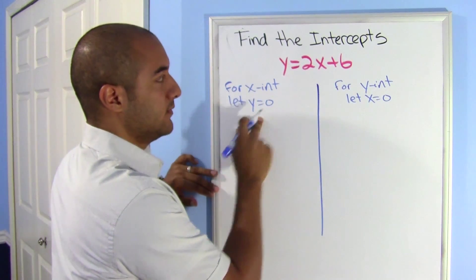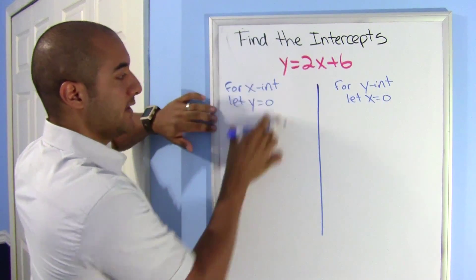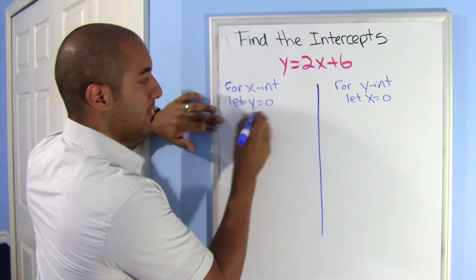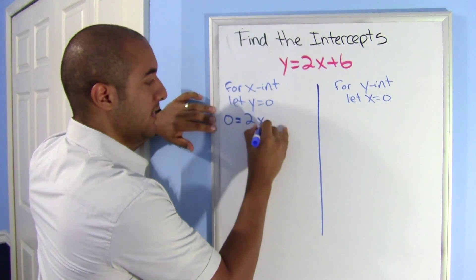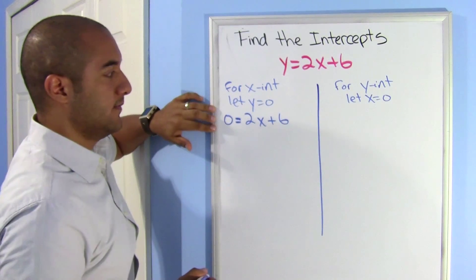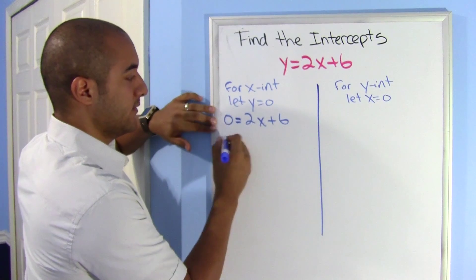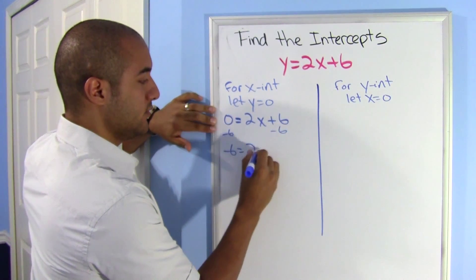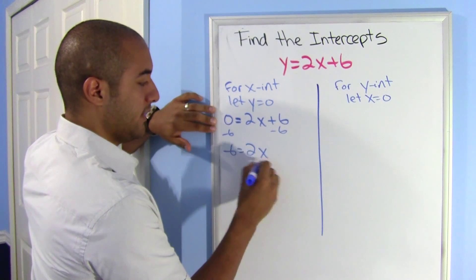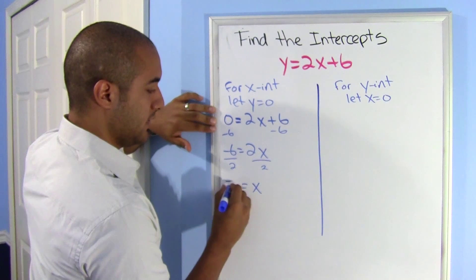And then now all I have to do is substitute that, it tells you what to do. So for my x-intercept, this is what happens. My y is 0, so 0 equals 2x plus 6. I have an x to solve for, so let me get this 6 out of the way. Minus 6, negative 6 equals 2x, divide by 2, and x equals negative 3.